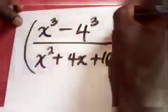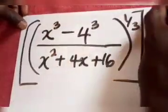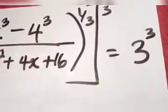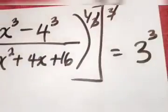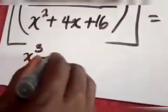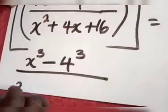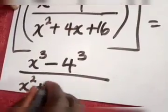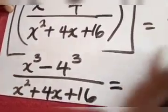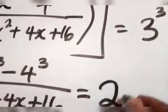Don't forget that we are all in cube root. Now, we are taking the cube on both sides, so this cancels this. We now have x raised to the power of 3 minus 4 raised to the power of 3, all over x squared plus 4x plus 16, is equal to 3 raised to the power of 3, which is 3 times 3 times 3. That will give us 27.